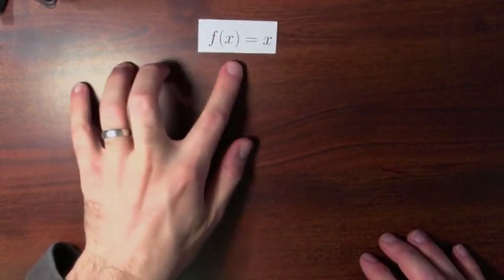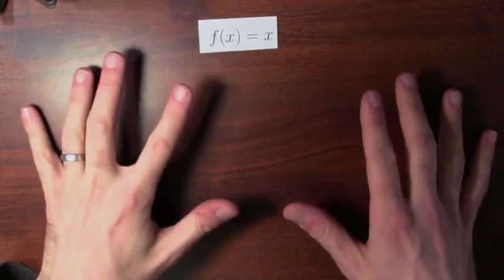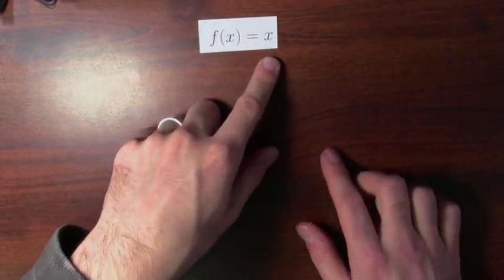Here's the first function in our library. f of x equals x, the identity function. Whatever you plug in, this function outputs that same thing.